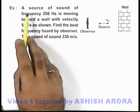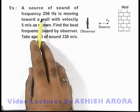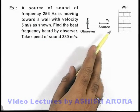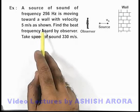In this example, we are given that a source of sound of frequency 256 Hz is moving towards a wall with velocity 5 meters per second as shown.